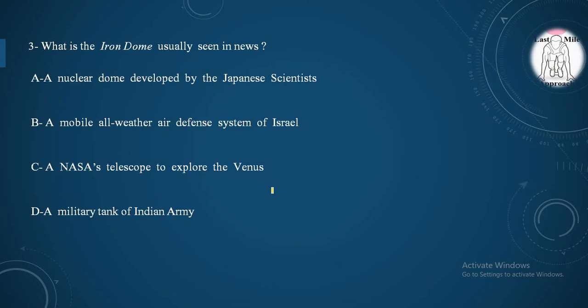Moving to our third question. What is the Iron Dome usually seen in news? Option A. It is a nuclear dome developed by Japanese scientists. Option B. It is a mobile all-weather air defense system of Israel. Option C. It is a NASA's telescope to explore the Venus. Option D. It is a military tank of Indian Army.